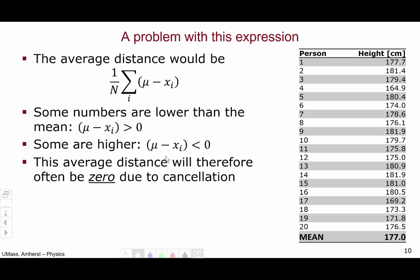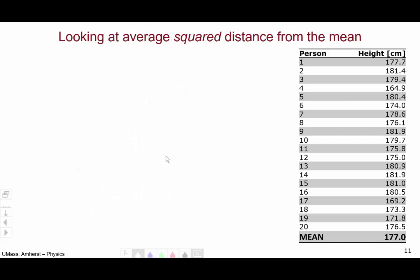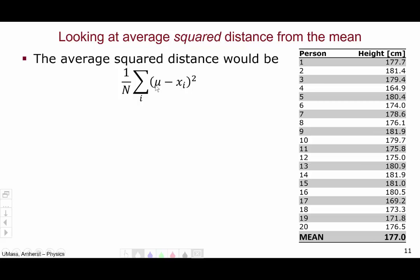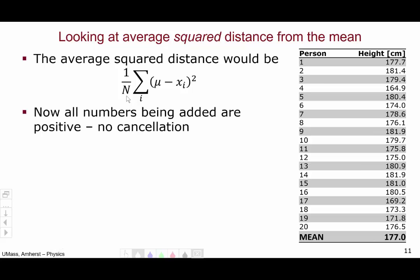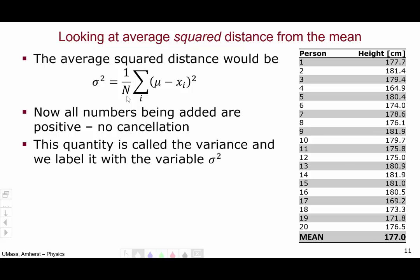So how can we get around this problem? Well, you might think absolute values, but for calculus reasons, absolute values have some problems. So a better way to get around having negative numbers is to look at squaring them. Because no matter what, when I take a number and square it, the result is positive. So let's look at the average squared distance from the mean. Mathematically, the average squared distance from the mean would be take the distance from the data point to the mean, which is mean minus data point, square it, add them all up, and divide by the number of measurements. Now, all the numbers being added are positive, so there's no cancellation. This quantity is called the variance, and we will label it with the variable Greek σ², for reasons that will become apparent in a moment.